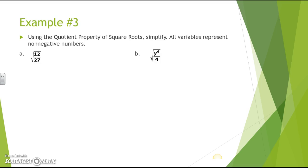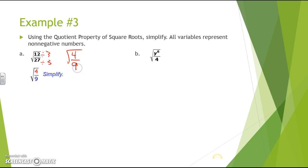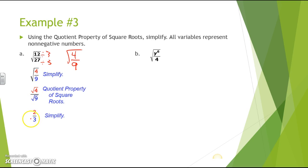Let's solve some examples using the quotient property of square roots. We have the square root of 12 over 27. We can simplify by dividing numerator and denominator by 3: 12 divided by 3 is 4, and 27 divided by 3 is 9. So we have the square root of 4 over 9. Then using the quotient property, the square root of 4 over the square root of 9 simplifies to 2 thirds. That is my answer.